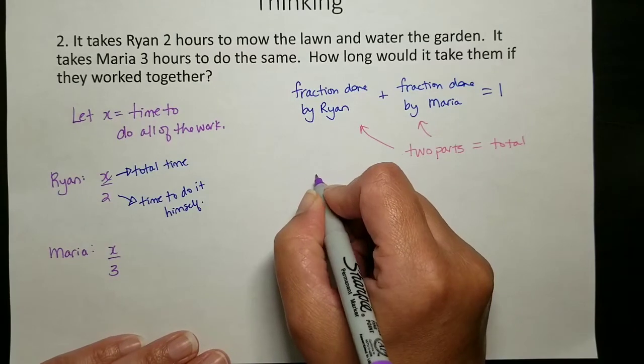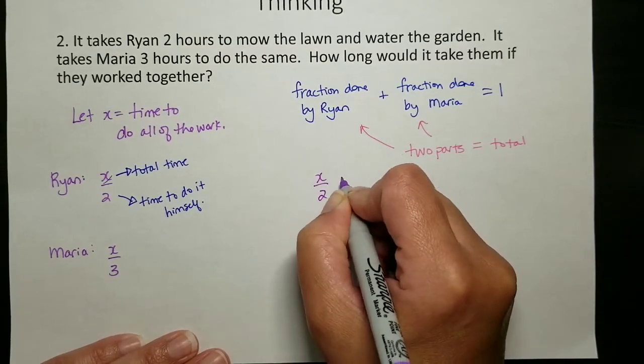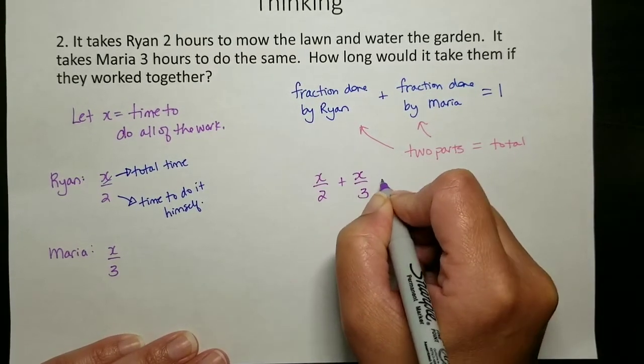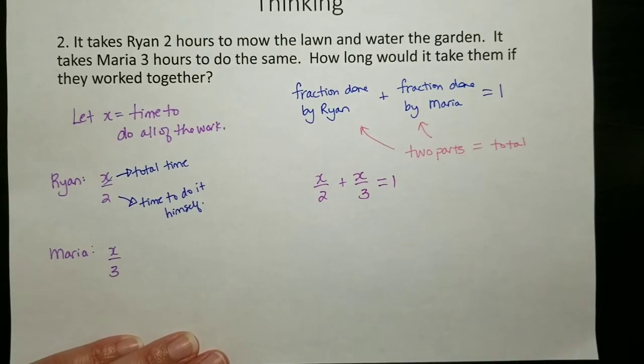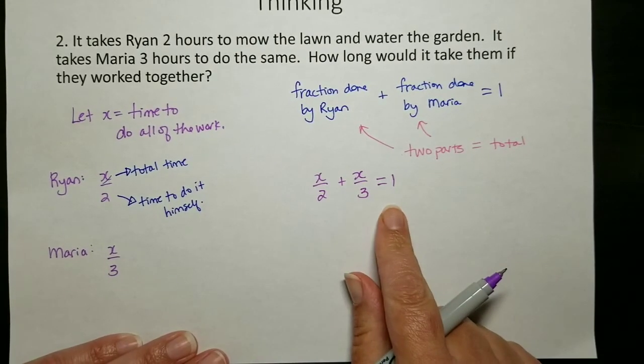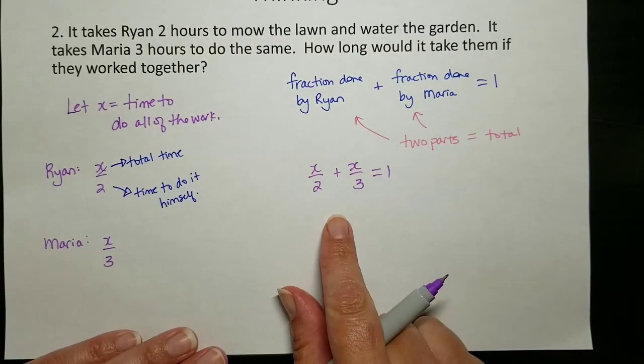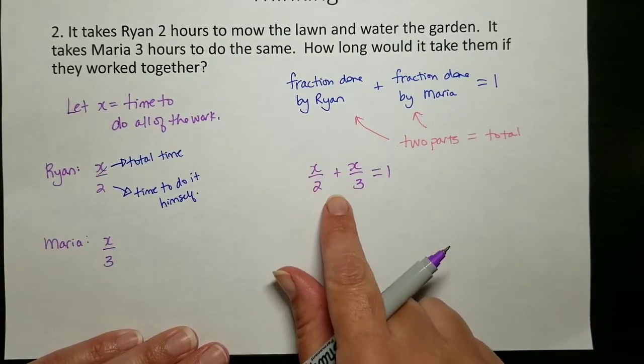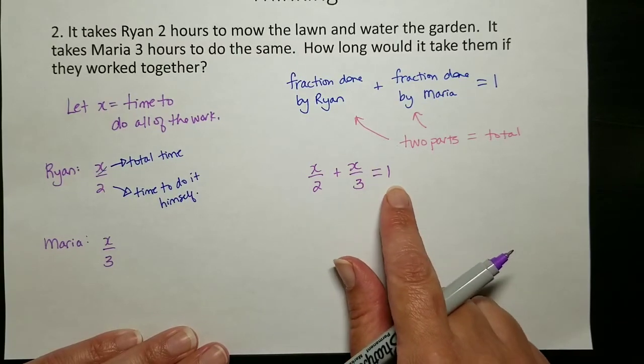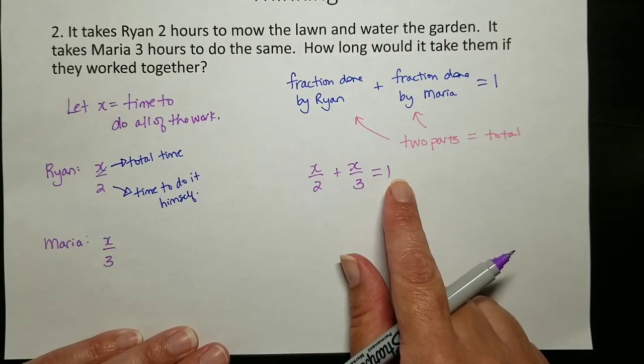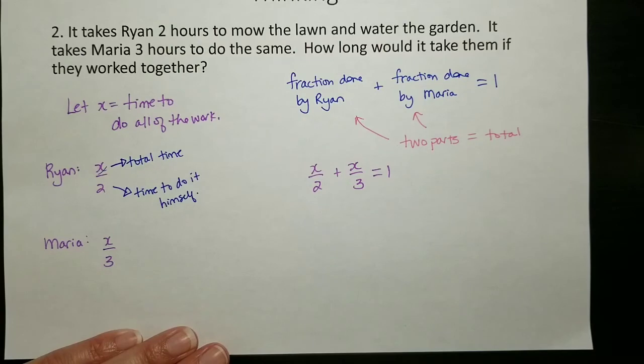So here we've got the fraction of work that Ryan will do and the fraction of work that Maria will do. So we can write an equation: x over two plus x over three equals one. So we've got a way of figuring out what the total amount of time is. It's how much of the work gets done by Ryan plus how much gets done by Maria, that has to equal one. Now we have an equation that we can solve.